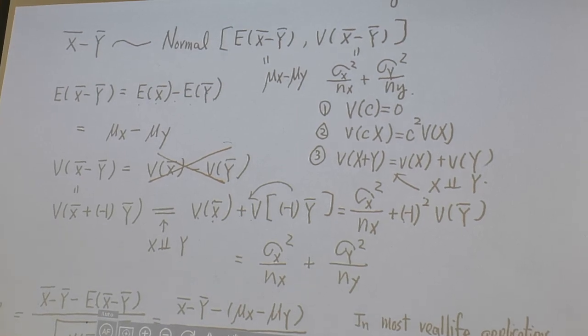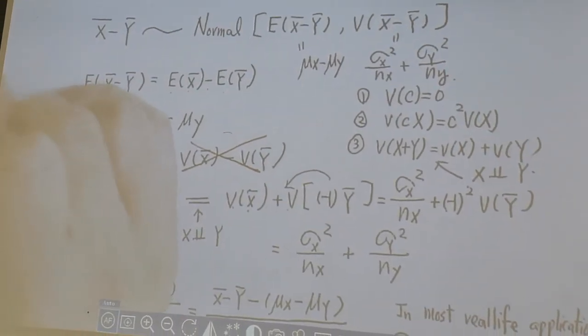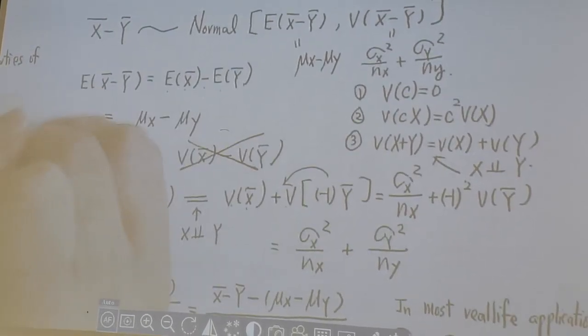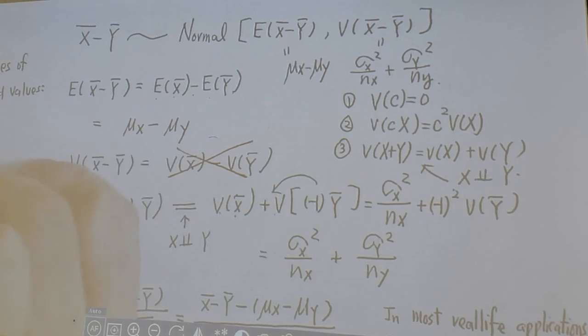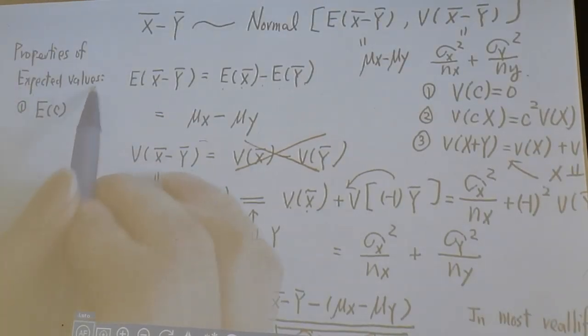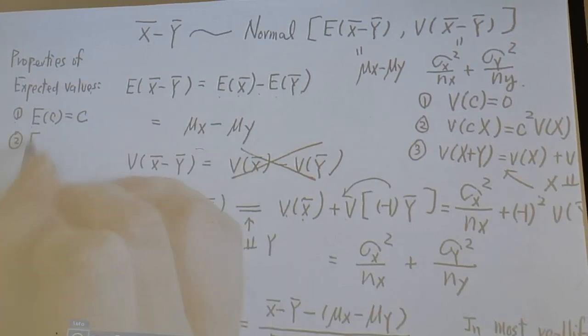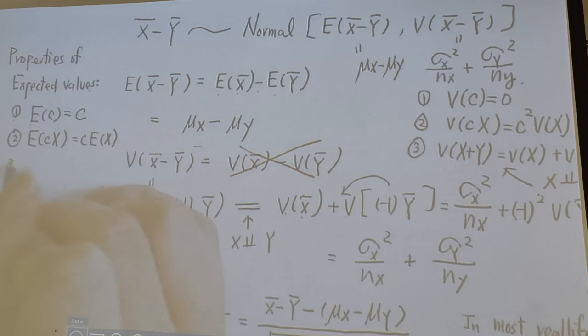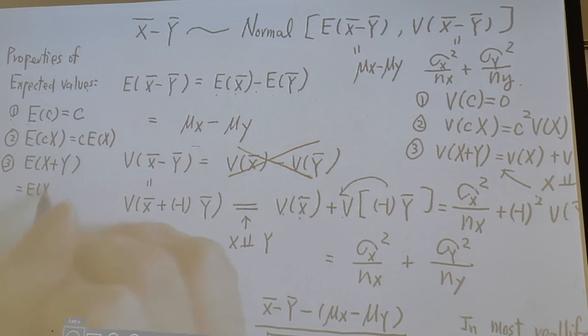Alright, let's take a quick recall on the property of expected value. Property one: expected value of a constant is a constant itself. Second one: expected value of a constant times x is a constant times expected value of x. And property three: expected value of x plus y is E x plus E y.